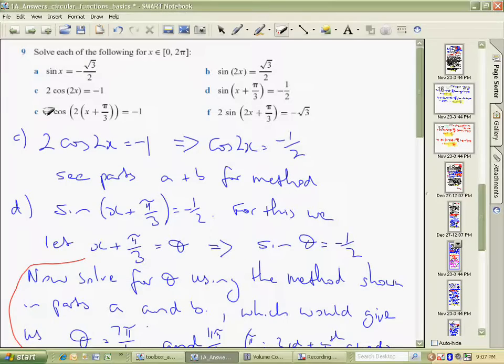Alright, we're going to continue on with question 9 here. Looking at 9c, we're not going to go through this one because it's the same as part b with one exception. What we need to do here is divide both sides by 2, so we end up with cos 2x equals minus 1 half.